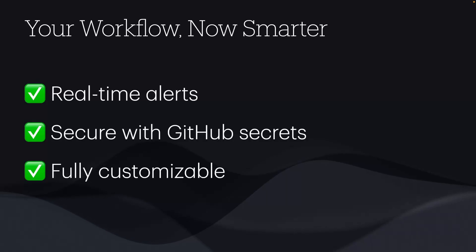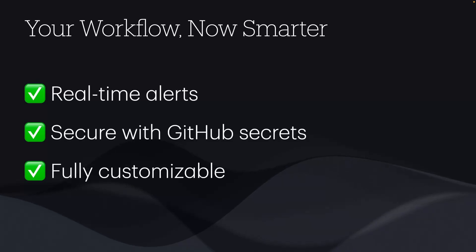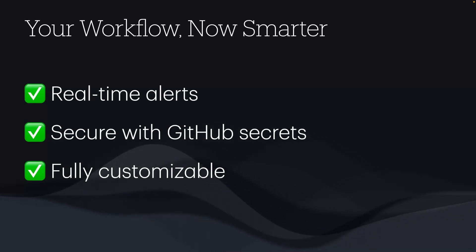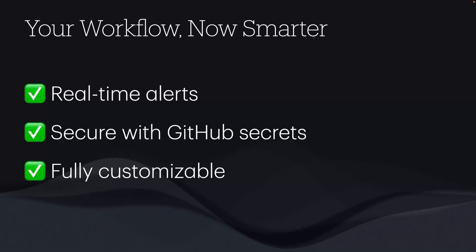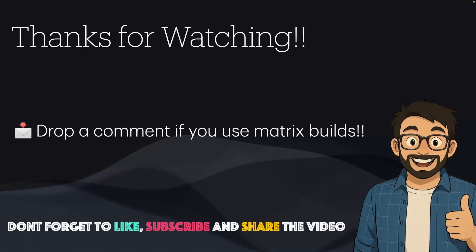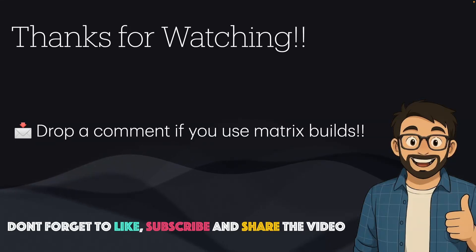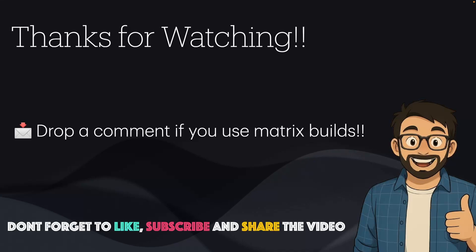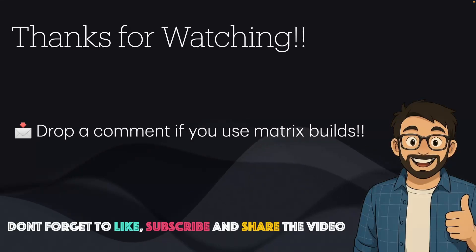You've now built a GitHub Actions workflow that sends job results to Slack instantly, secured with GitHub Secrets, using emojis and URLs for clarity. For every GitHub Actions job you'll get real-time alerts that are fully customizable. Thanks for watching — if this helped, hit that like button, subscribe, and share it with your DevOps team. Drop a comment if you use matrix builds to clean up your workflows; if not, I'll pin a tutorial in the description you can watch next.